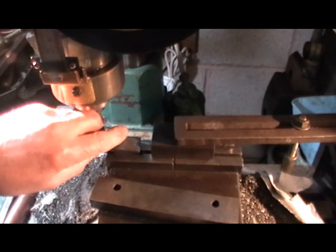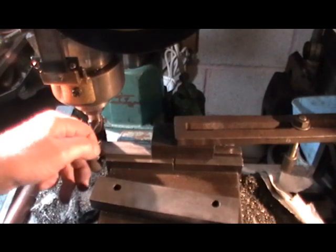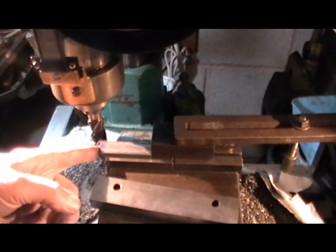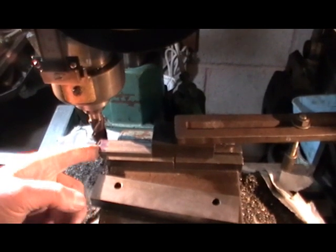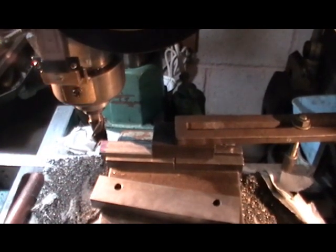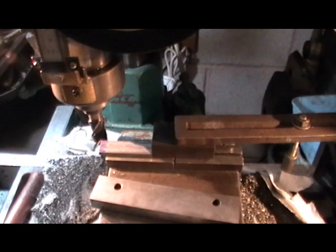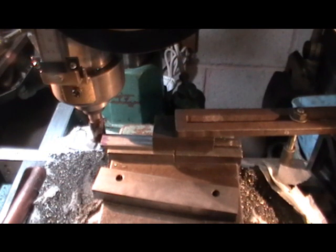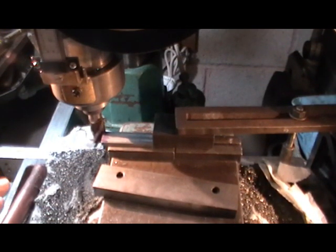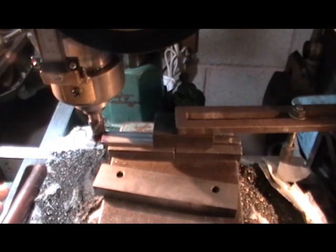Then all you've got to do is drop all the following ones in, up to that stop, clamp your vice up, leave your cutter set where it was, and then take your skim across that, and then they all come out same size.